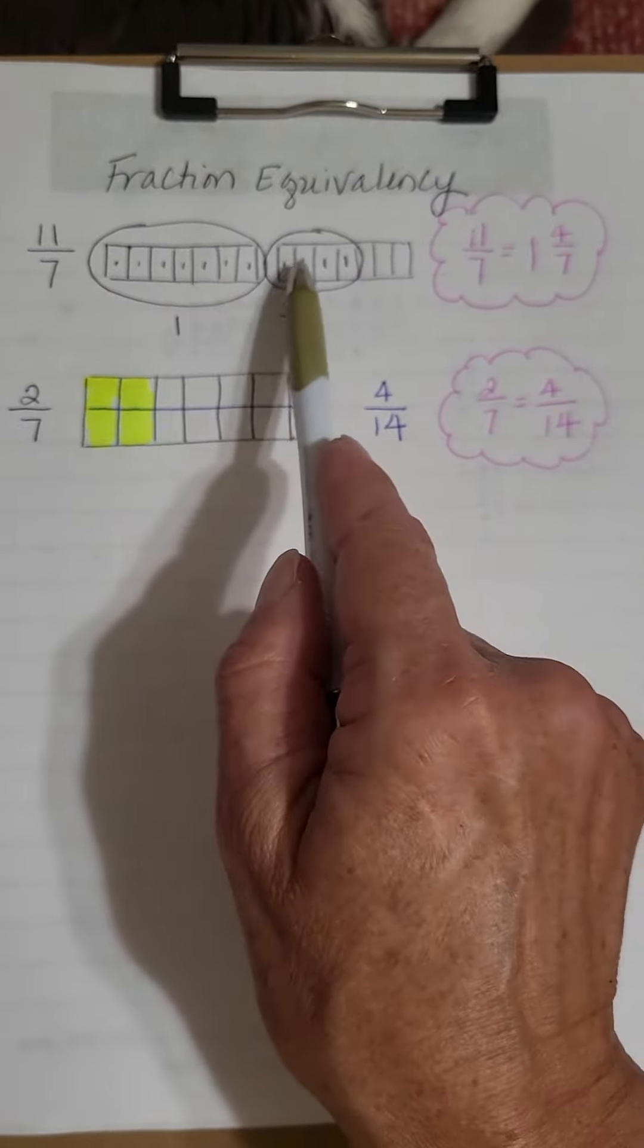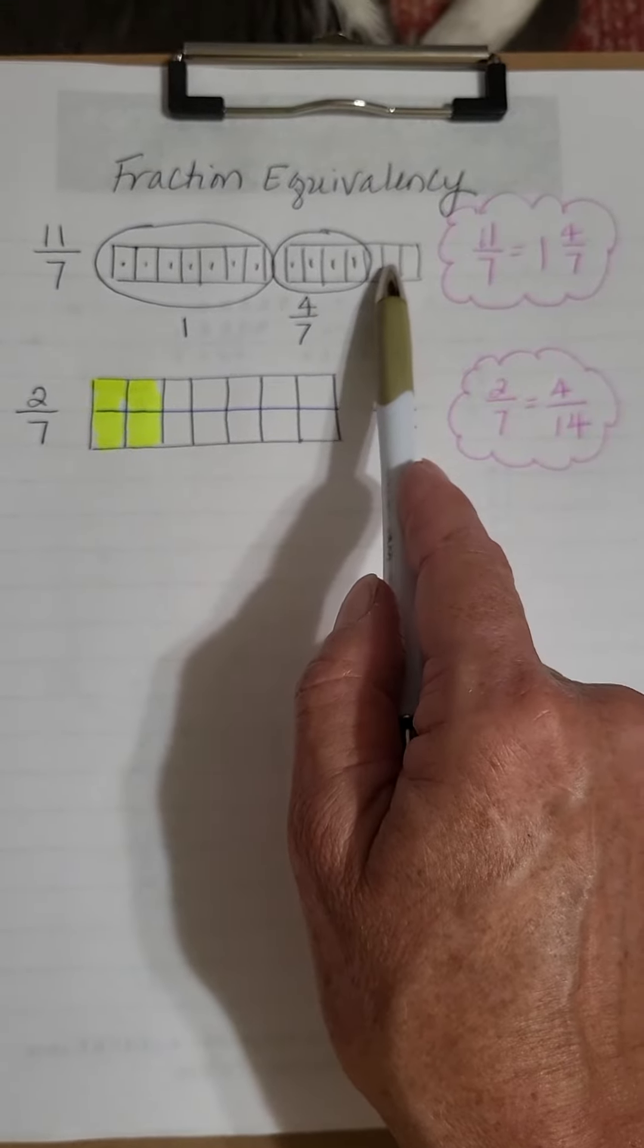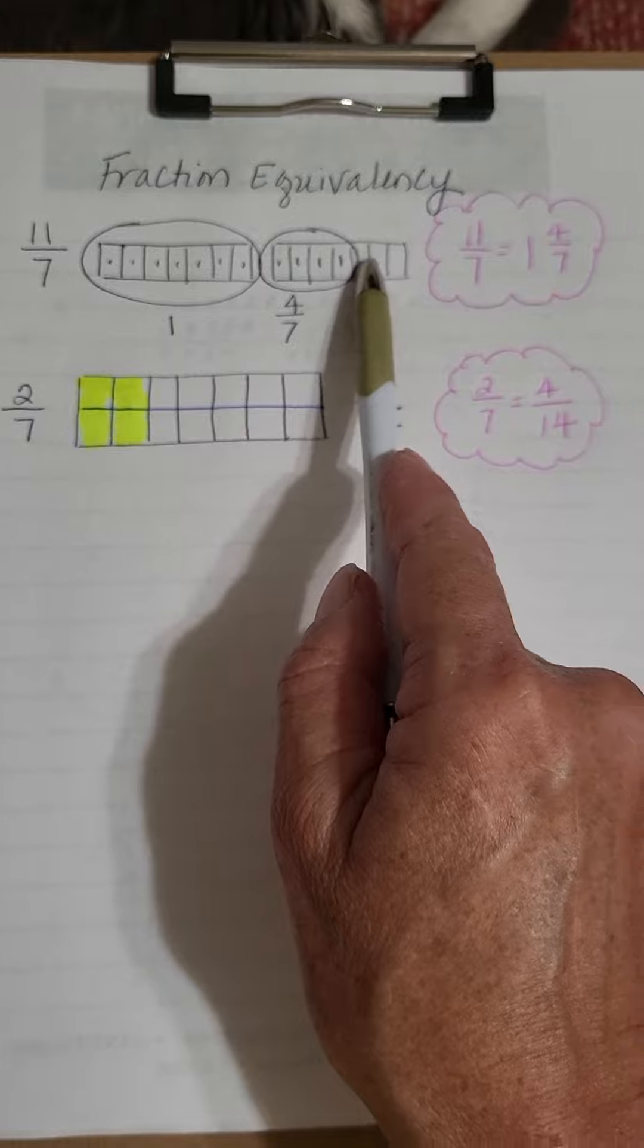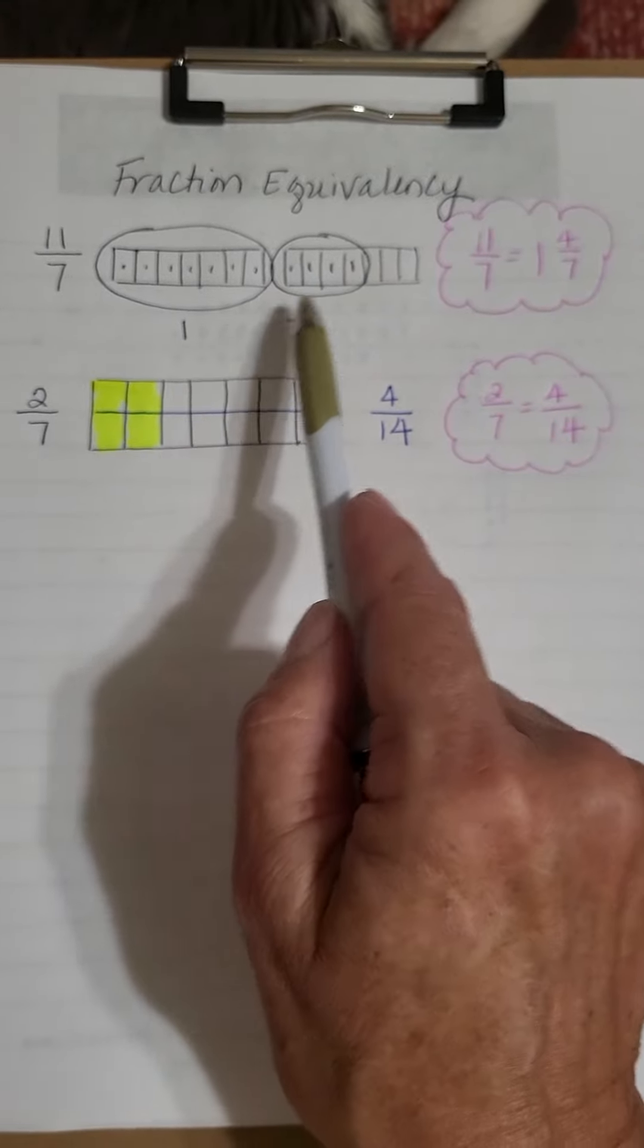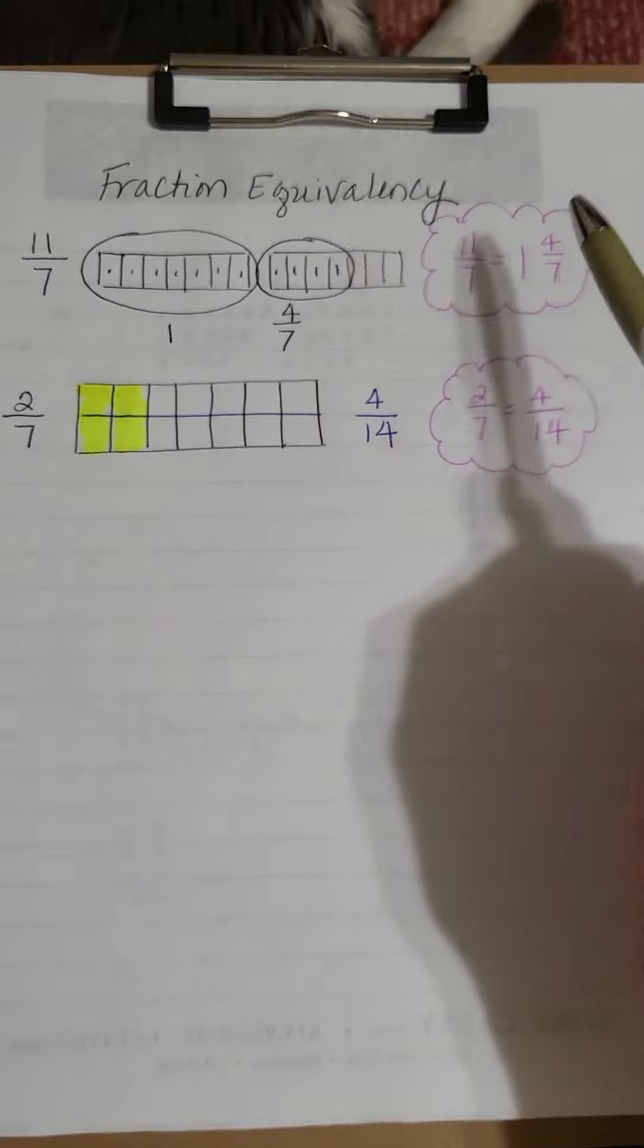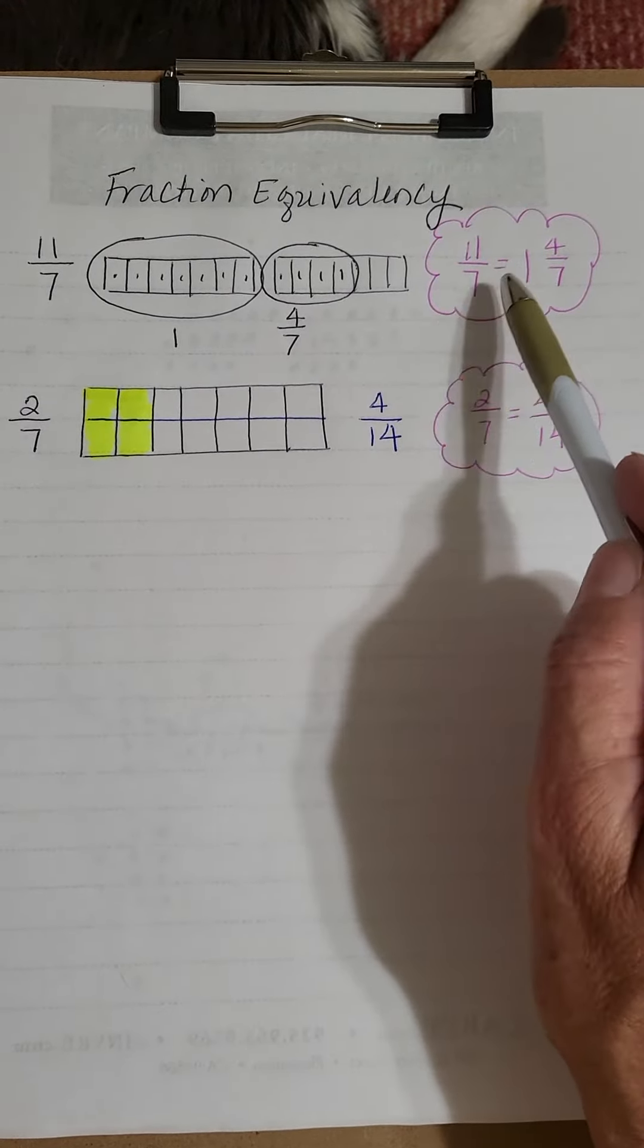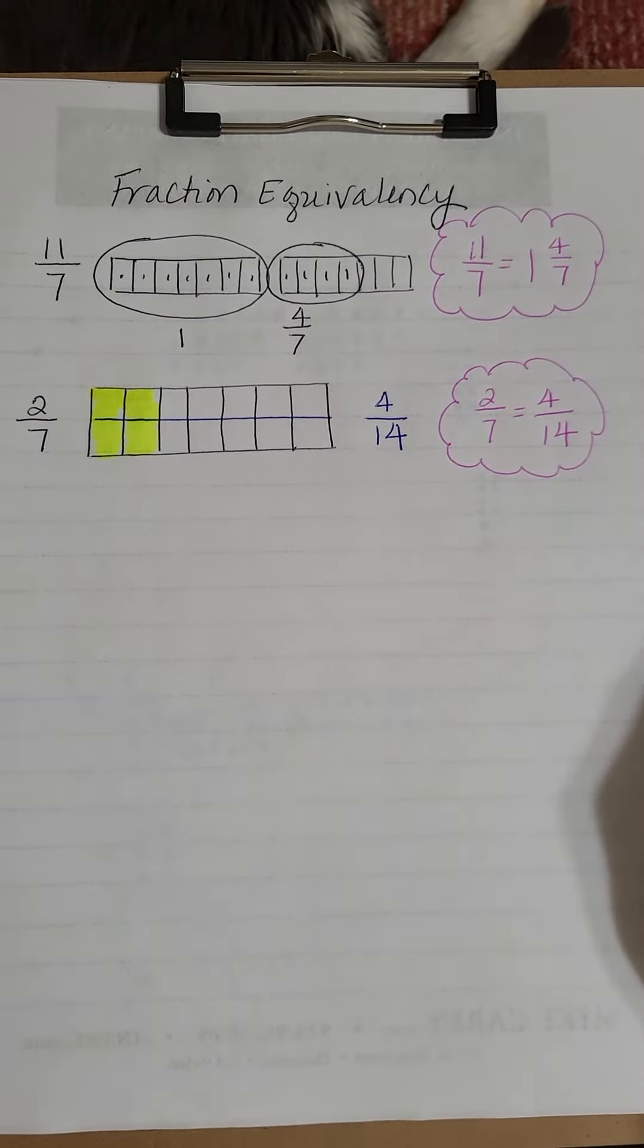I have 11 over 7, which means that I have at least 7, or one whole group. So I went 7, 8, 9, 10, 11. I don't have enough to make two wholes, but I have one whole and four pieces out of a seven whole. So I ended up with the fractional equivalency of 11 over 7 equals 1 and 4 sevenths.